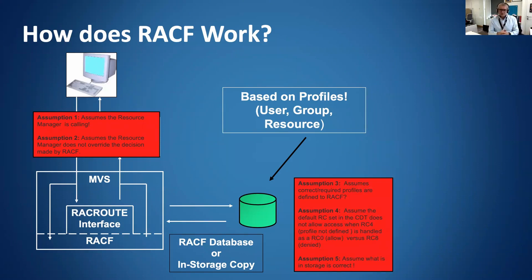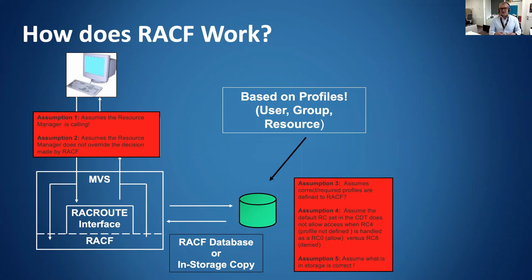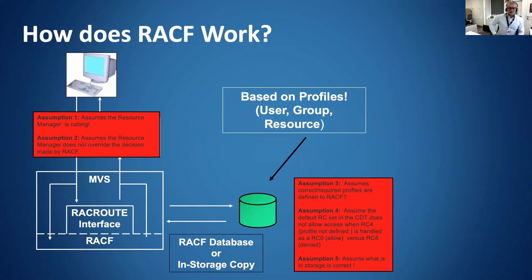Assumption three: we've got all the right profiles. Assumption four: that the return code in the class descriptor table handles the 'not found' case, defaulting to either return code zero — allow — or return code eight — access denied. The fifth assumption is that if we've got profiles in storage, they are correct. When you change the RACF database, you don't change the in-storage version. You have to tell RACF — RACList refresh — to copy profiles from the RACF database to storage. If you don't, access granted on the database won't be reflected in the in-storage profiles.